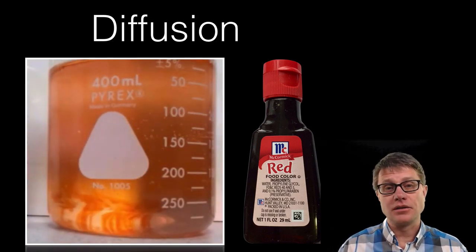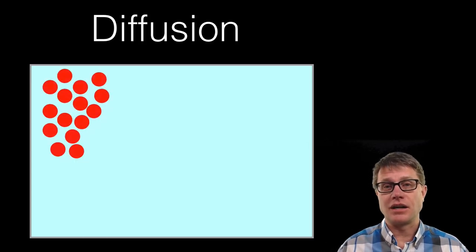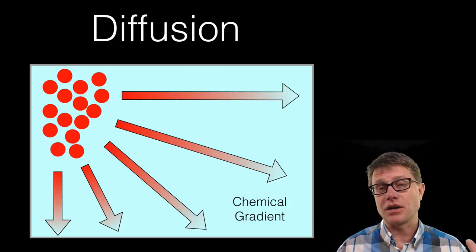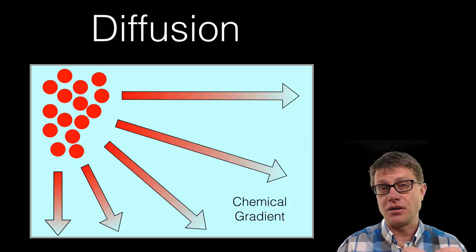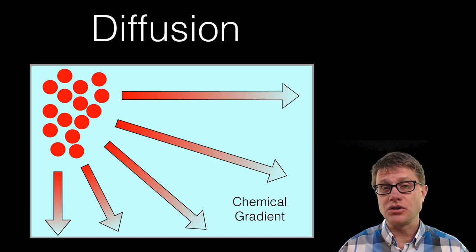What is going on at the molecular level? Well, those red food coloring molecules have a certain amount of kinetic energy. They are bouncing off of each other due to Brownian motion. And they are going to move along their chemical gradient or their concentration gradient from an area of high concentration to an area of low concentration. This is how diffusion works.